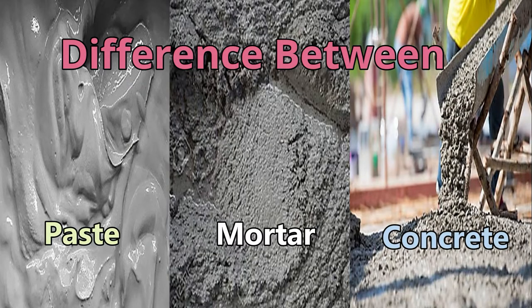In this video, let us know the difference between three most commonly used construction materials — where we use that material and why. Mainly based on their ingredients, they are differentiated: paste, mortar, and concrete.